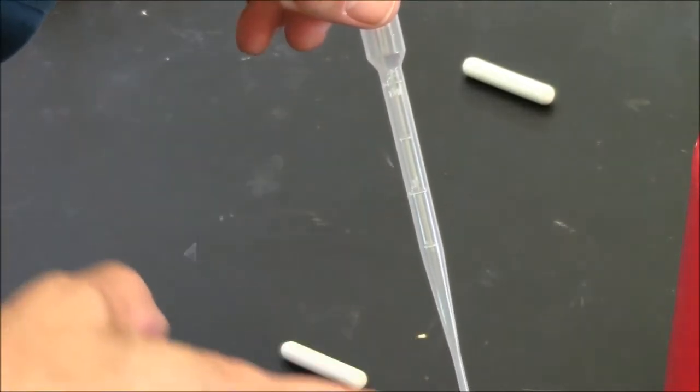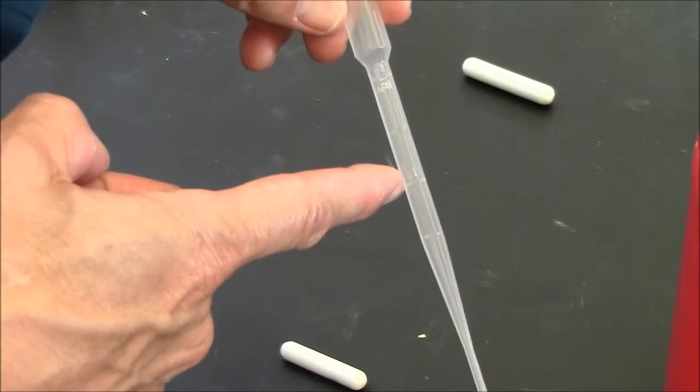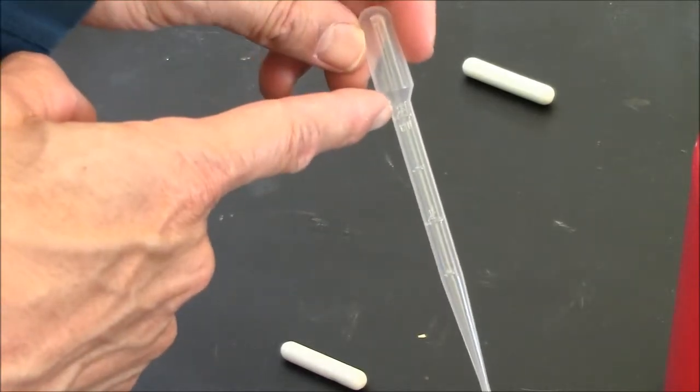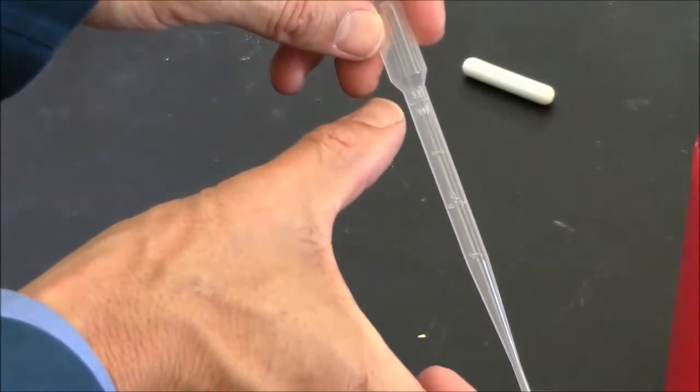You'll be using these pipettes to measure one milliliter today. There's a line here that says one, and a line here that says two. This is one milliliter from here to here. This is two milliliters from here to here.